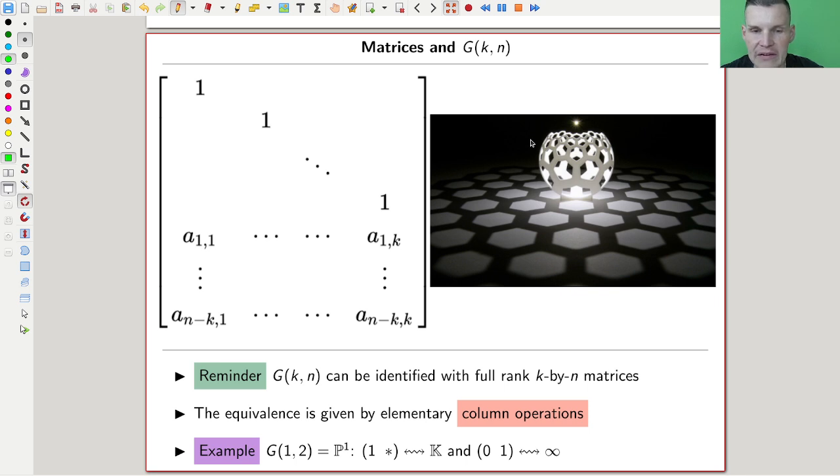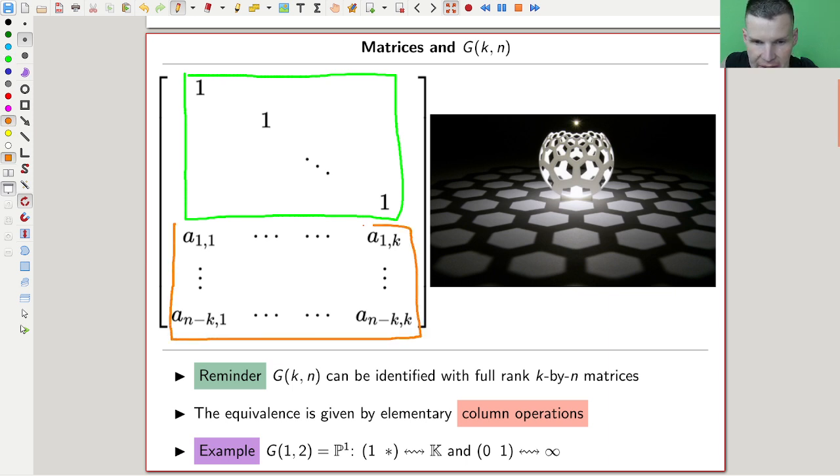So our little friend, the Grassmannian, it's kind of this type of picture where you have matrices up to row equivalents. So you can somewhat order them, such as they have some block and then some variables left that you can think of as being one of one A, whatever. Some variables in some kind of a K by N minus K block.